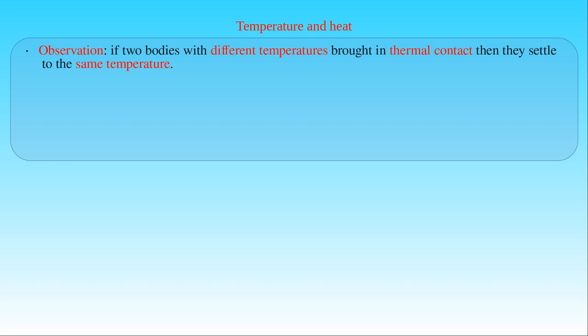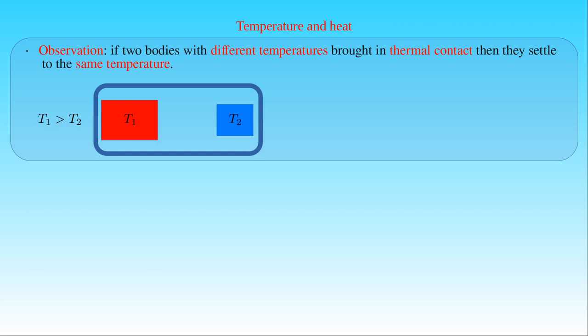If two bodies with different temperatures are brought into thermal contact, then they settle to the same temperature. Let the red square represent a warm body with a temperature T1 and the blue one a cold body with a temperature T2, where T1 is greater than T2. Let us also assume that the two bodies are thermally insulated from their environment, represented by the rounded corner rectangle enclosing the symbols of the two bodies. Therefore, these bodies have no thermal contact with their environment or surroundings.